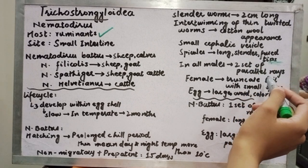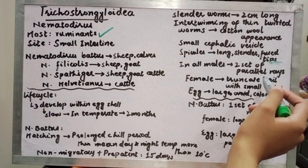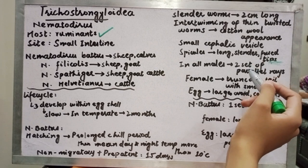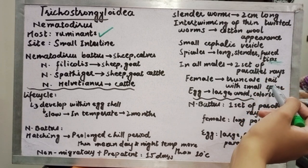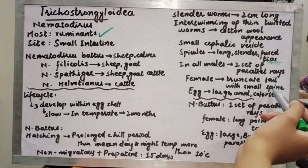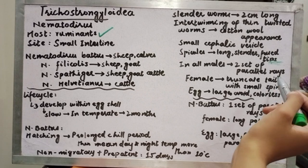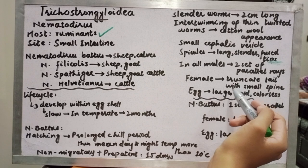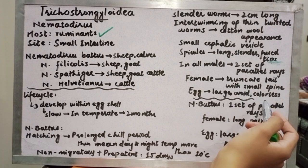In all males, there are two sets of parallel rays in the bursa. The eggs are large, ovoid, and colorless.